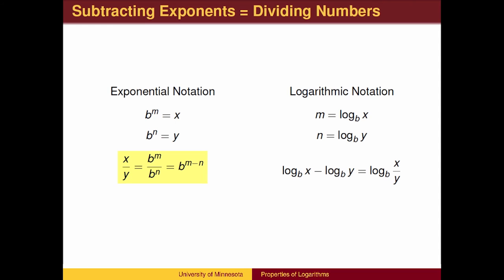What exponent do we put on b to get x divided by y? When dividing numbers, we subtract exponents. So m minus n is the exponent we put on b to get x divided by y.